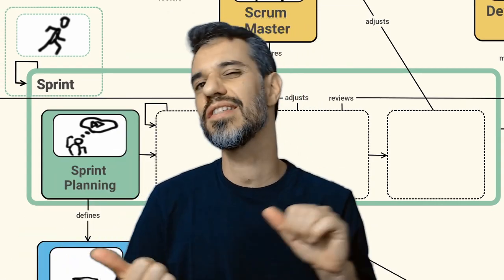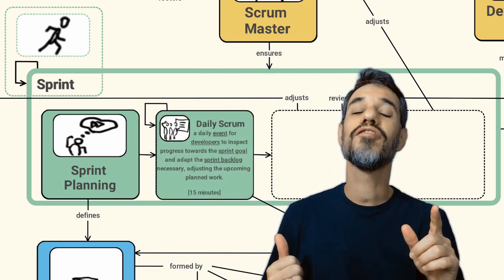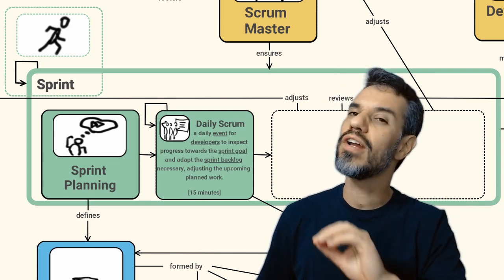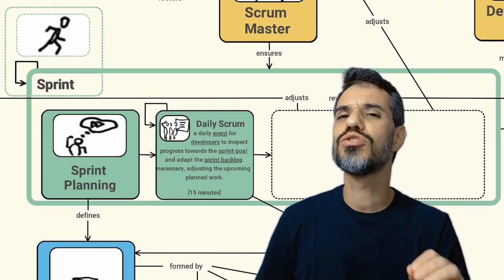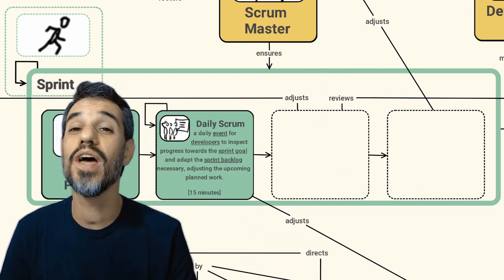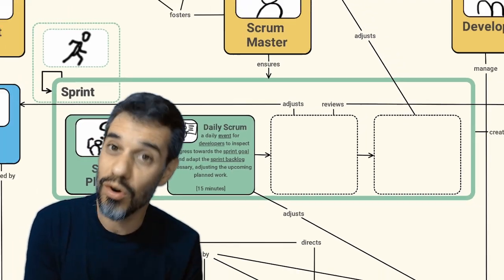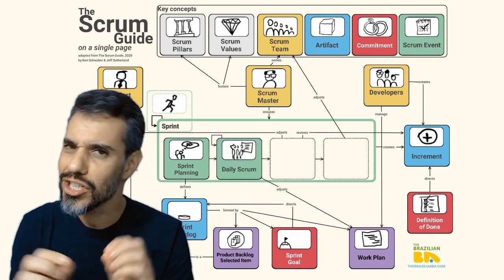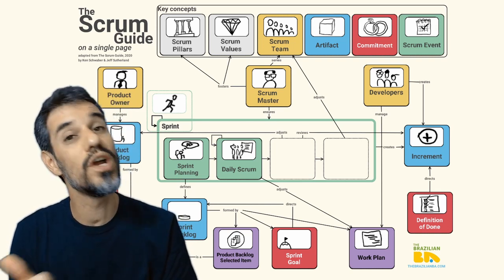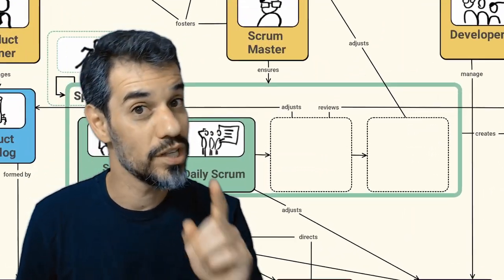Now let's take a look at the other events that happen inside the sprint. After the sprint planning we have the daily Scrum. Meetings with no more than 15 minutes that should happen every day. It's attended by the developers and they should see what's going on, what's going wrong or right, and adjust the work plan to attend the sprint backlog and guarantee that the sprint will deliver the sprint goal.